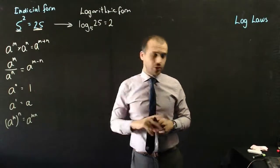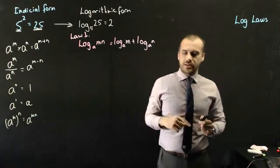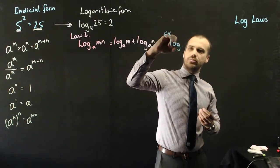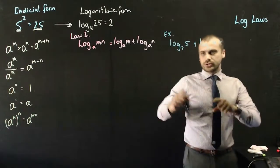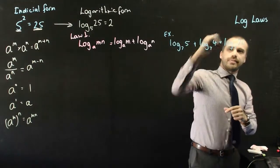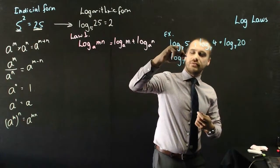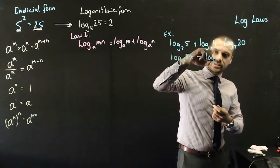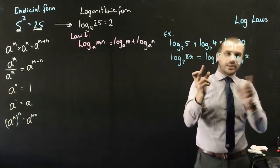So we're going to quickly whip through our log laws. First law: log base a of (m times n) is equal to log base a of m plus log base a of n. You can work both ways. For example, log base 7 of 5 plus log base 7 of 4 equals log base 7 of (5 times 4). You can also work the other way: log base 7 of 8x can be rewritten as log base 7 of 8 plus log base 7 of x — you split the times into plus.